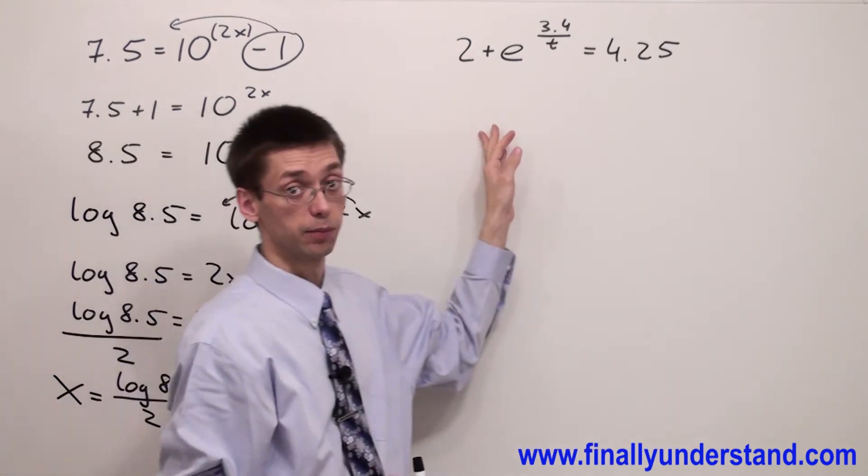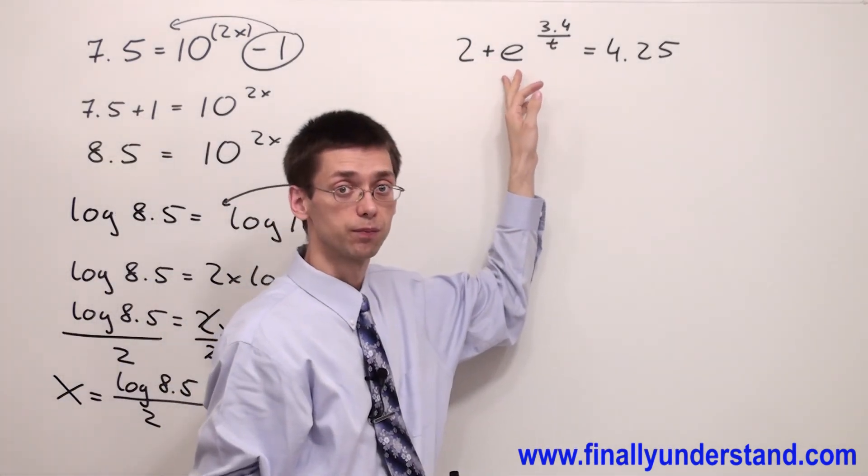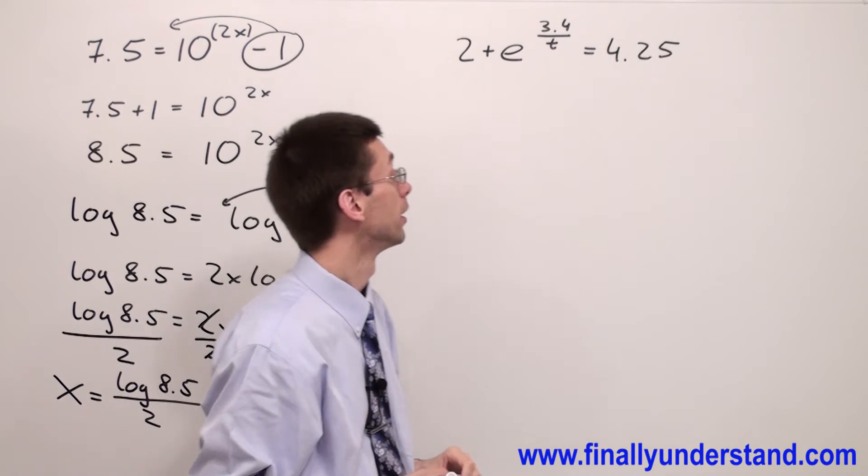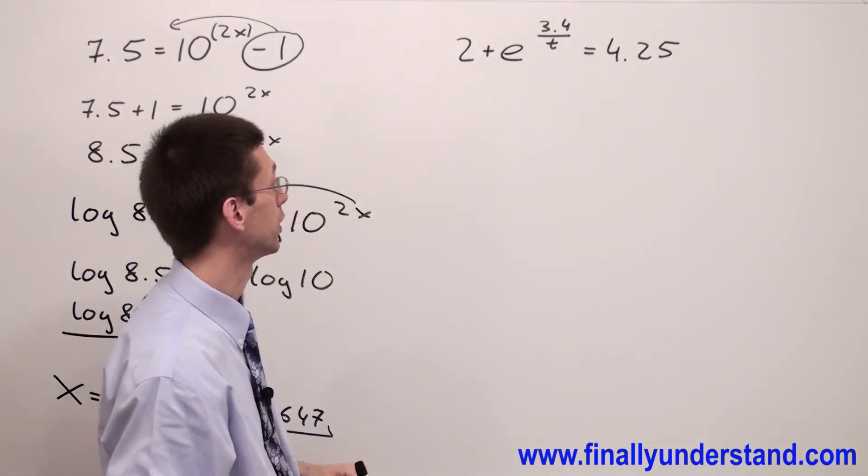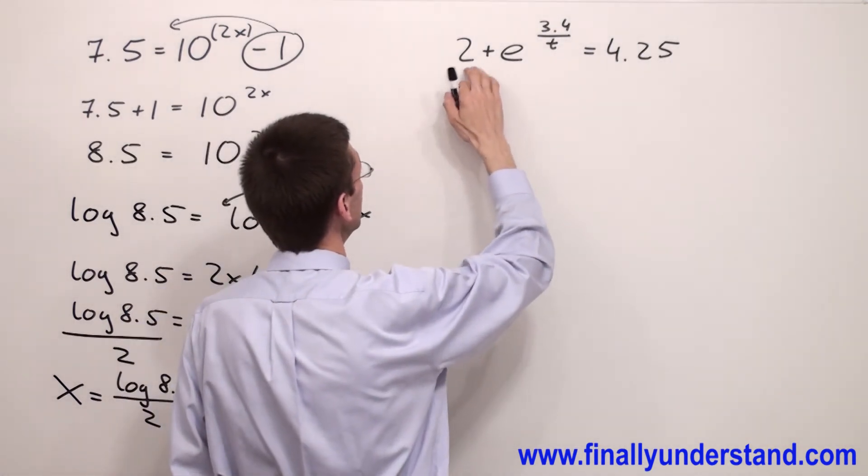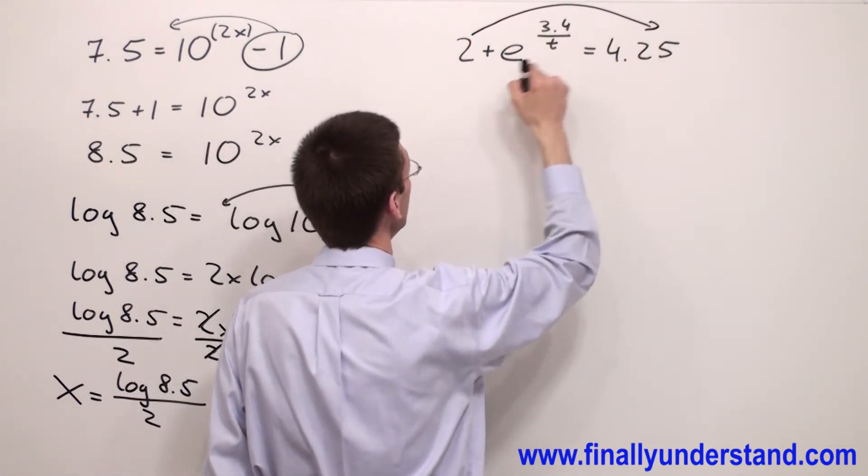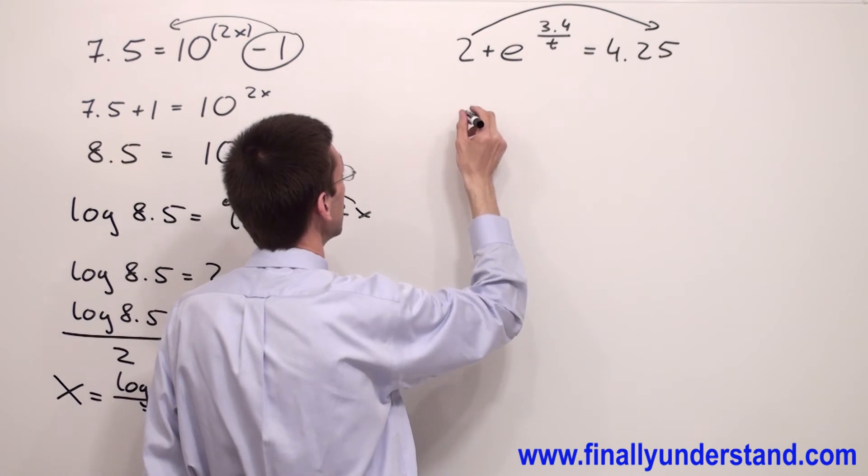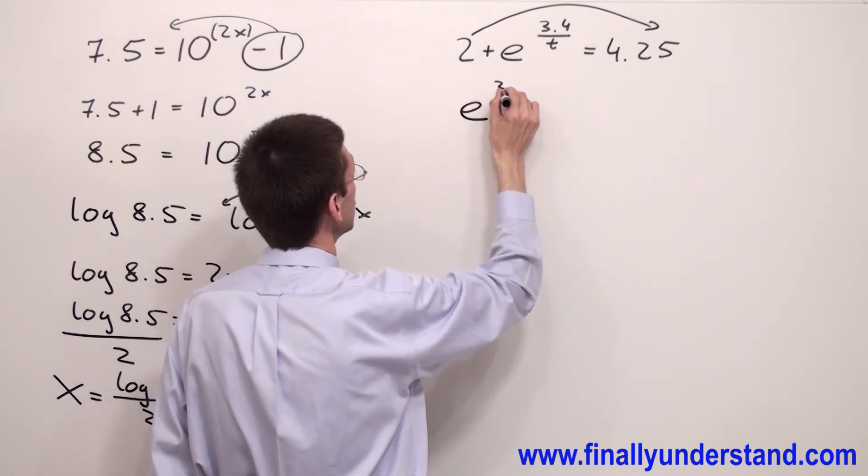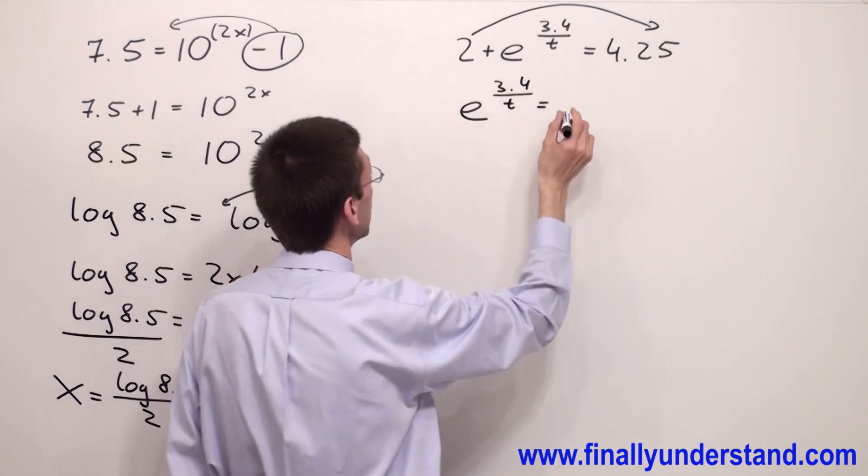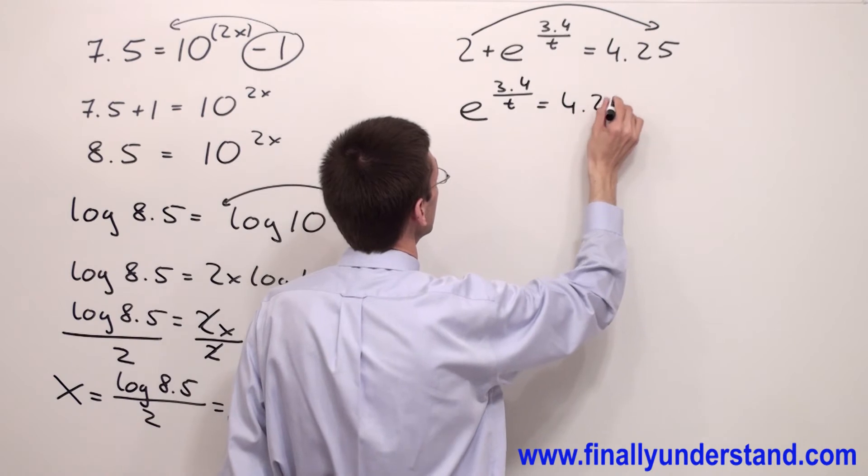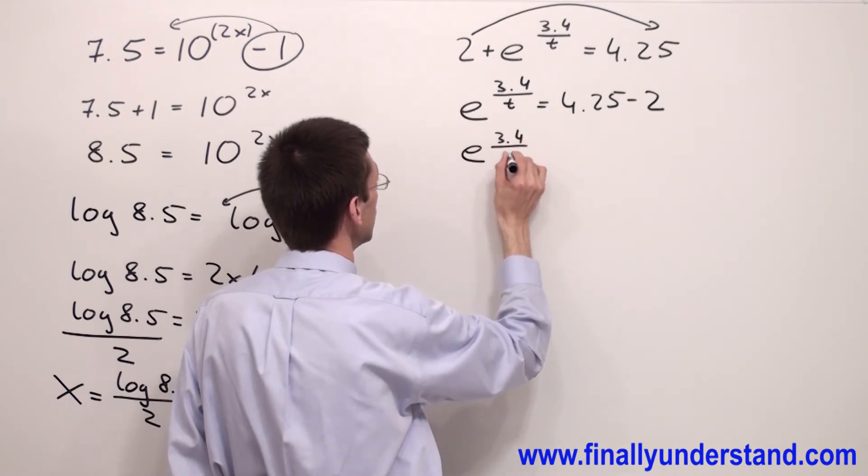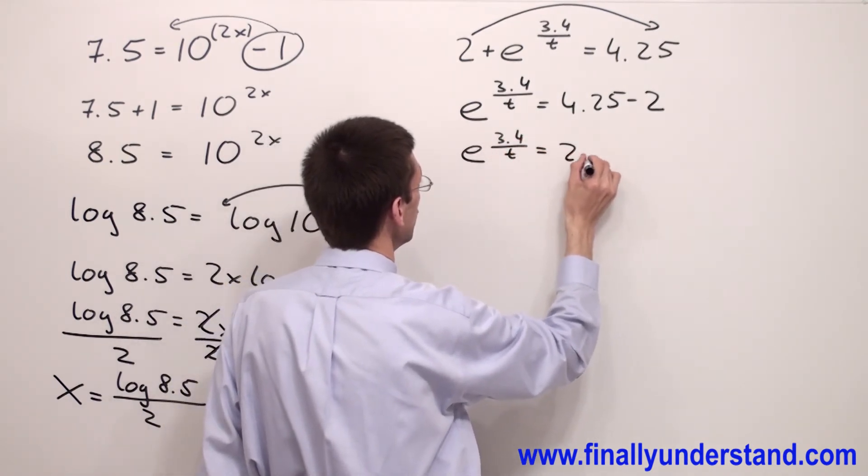Let's take a look at the second example. The base is e. So automatically, this is telling me that I'm supposed to use the natural logarithm. But before we are going to use logarithm, we have to organize this equation a little bit and move these two to the right side. Why? Because this two has no t next to itself. And simply rewrite this as e 3.4 over t is equal 4.25 minus 2, which is equal e 3.4 over t equals 2.25.